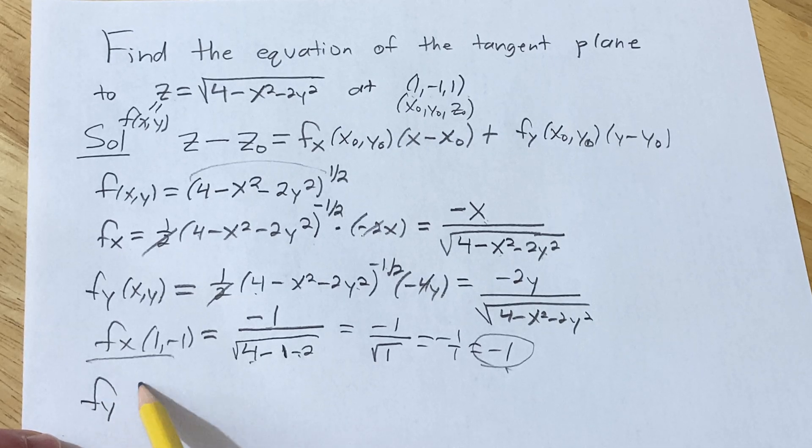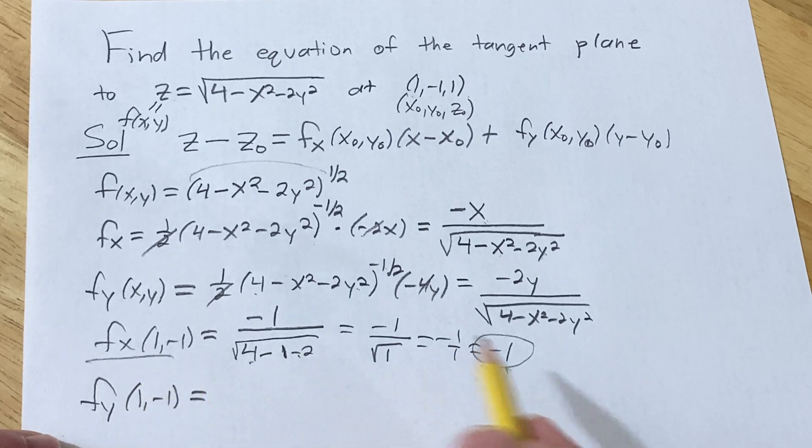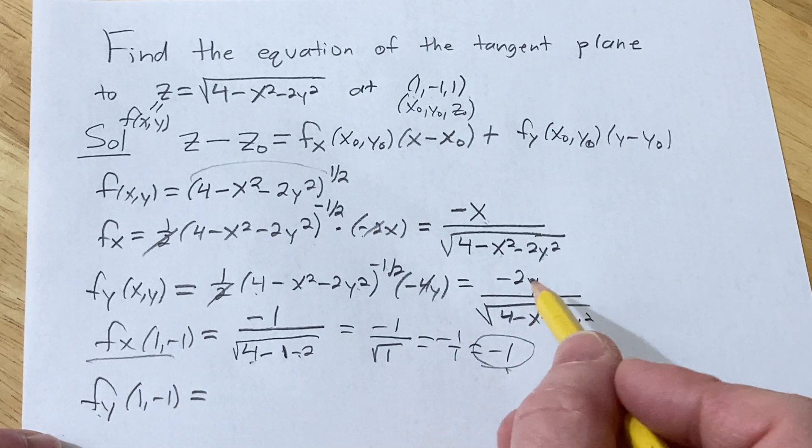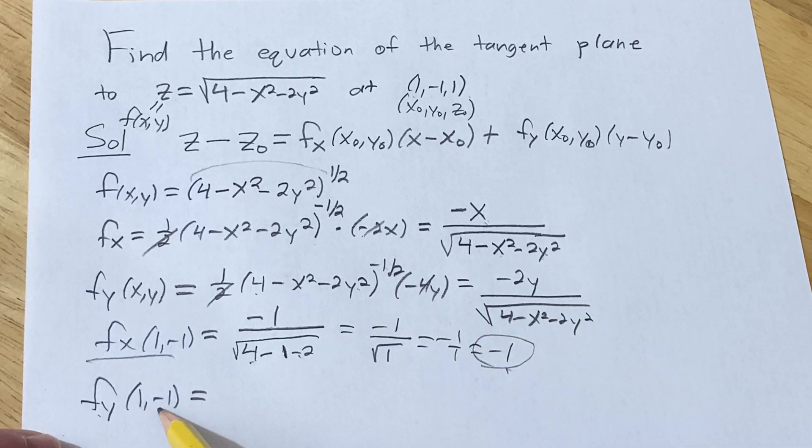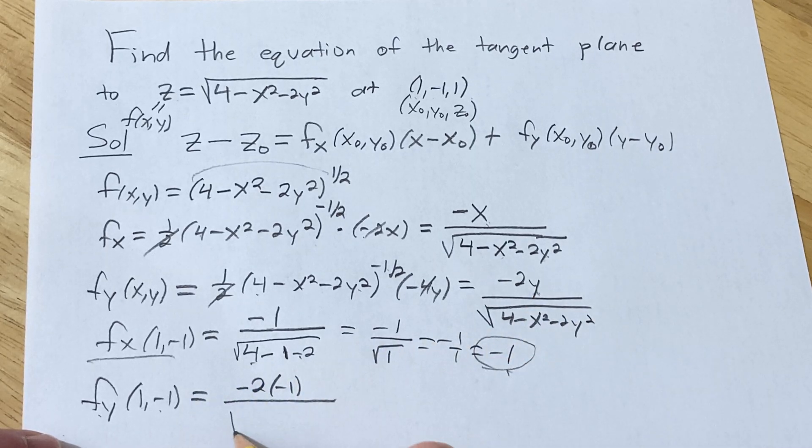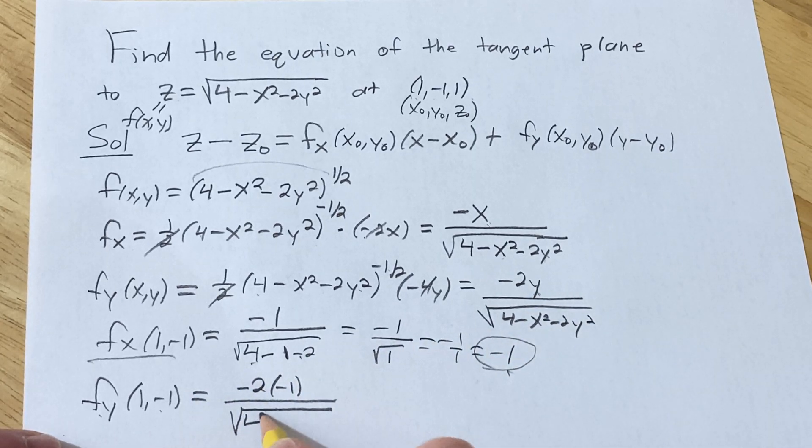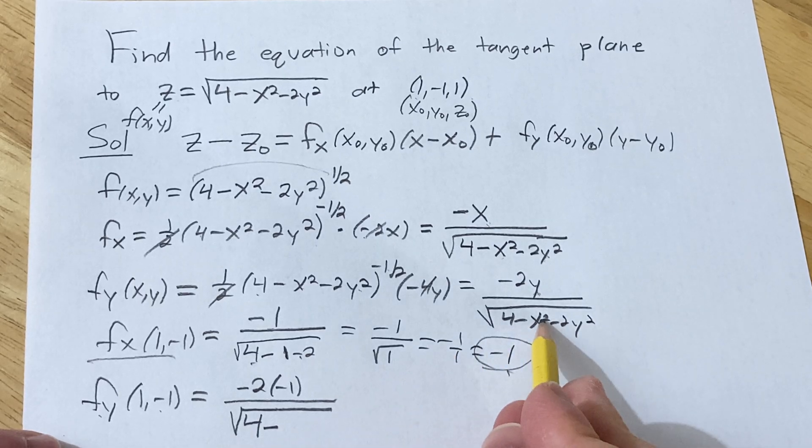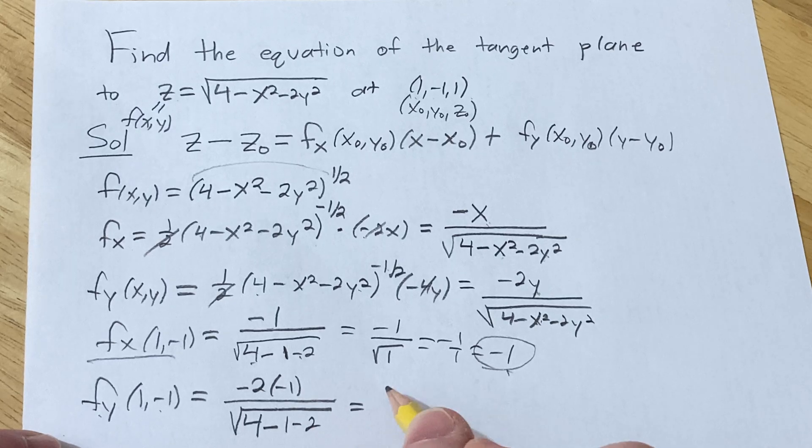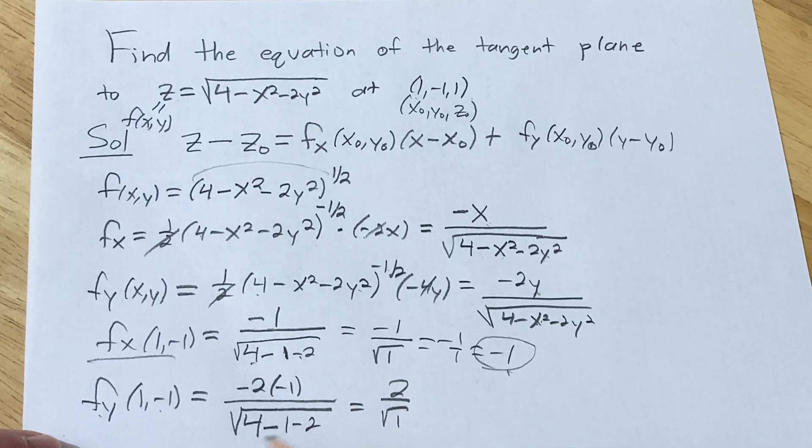And then fy at (1, -1), or that's fx at (1, -1) which is -1. fy at (1, -1), same thing. We have to be a little careful now though, because this is our y, so it's -2 times -1, because your y is actually -1. Then here we get 4 minus 1 squared is 1, same thing as before, minus 2. So this time it's going to be 2 over square root of 1, because 4 minus 3 is 1, which is just 2.